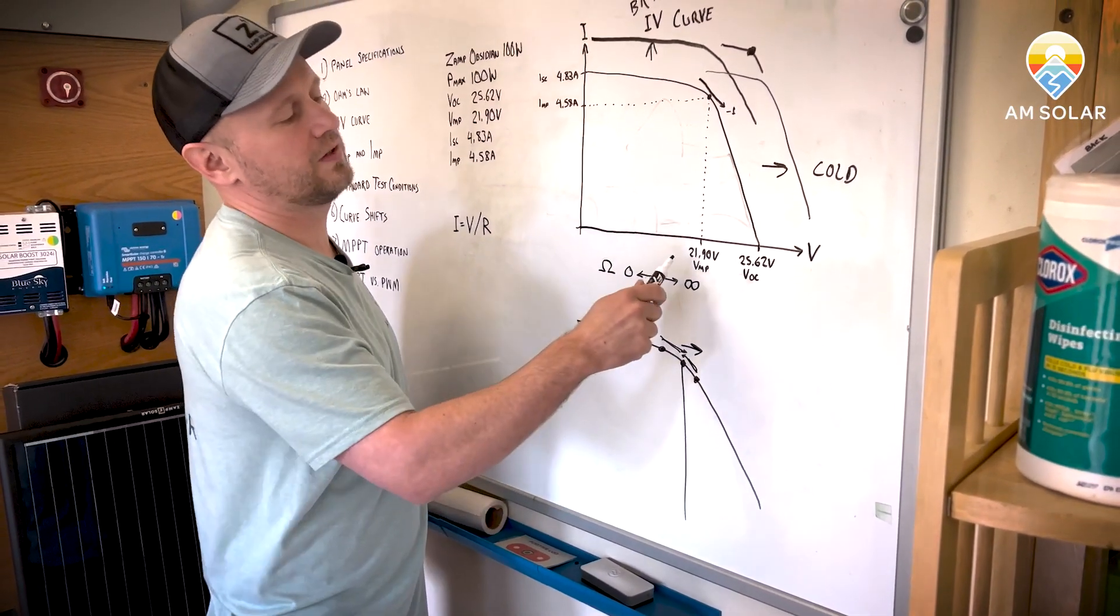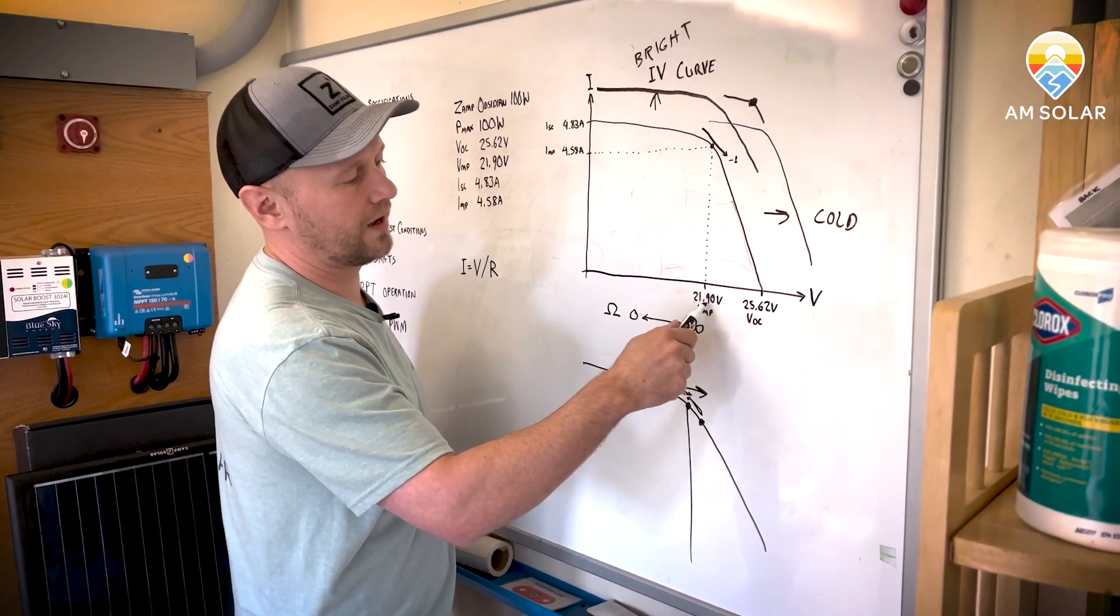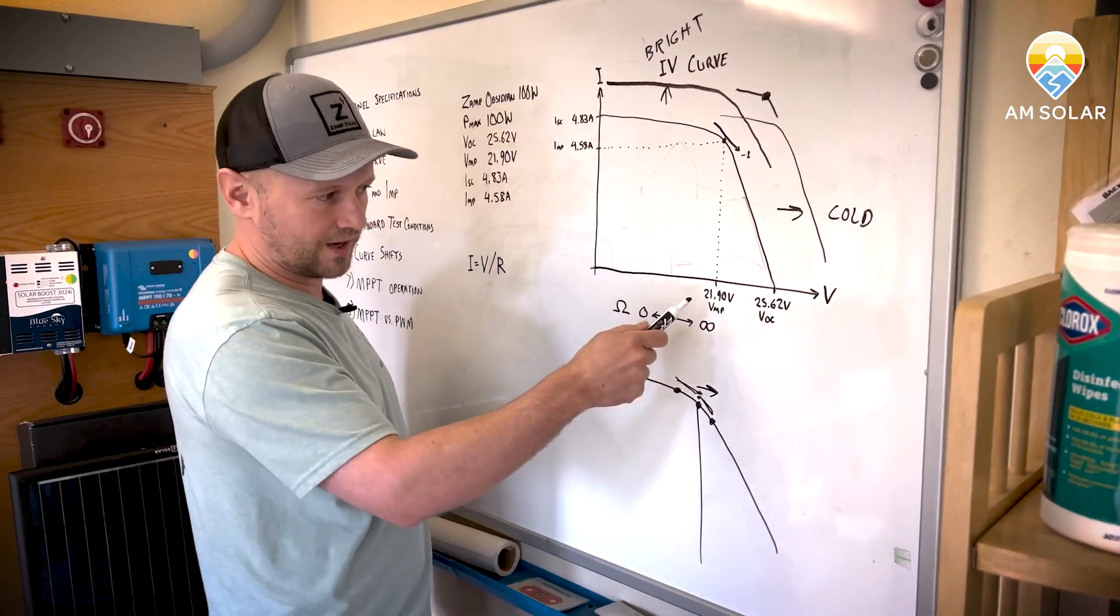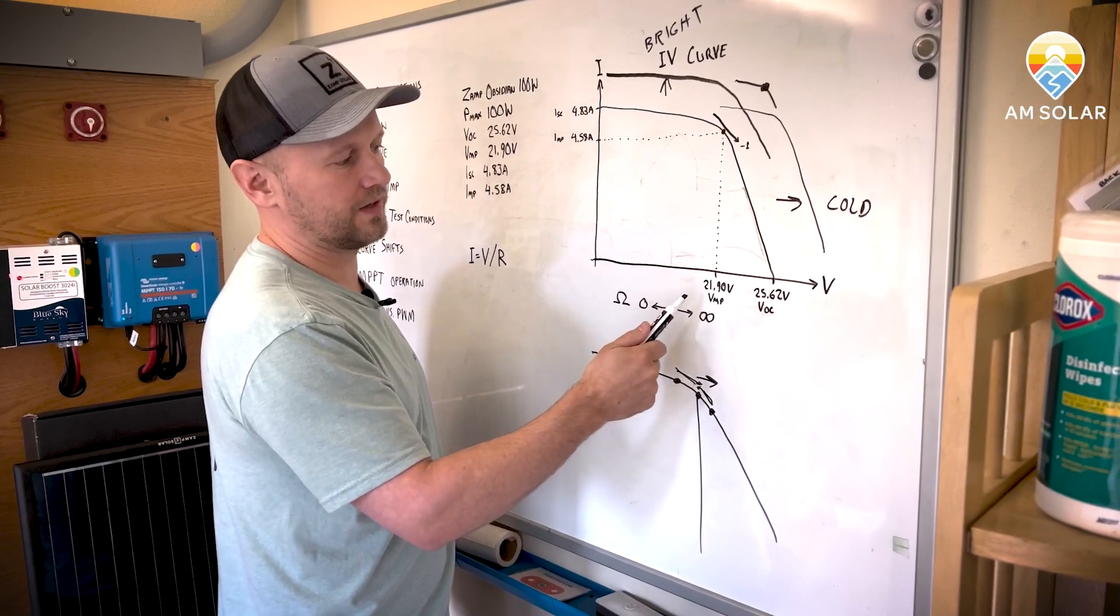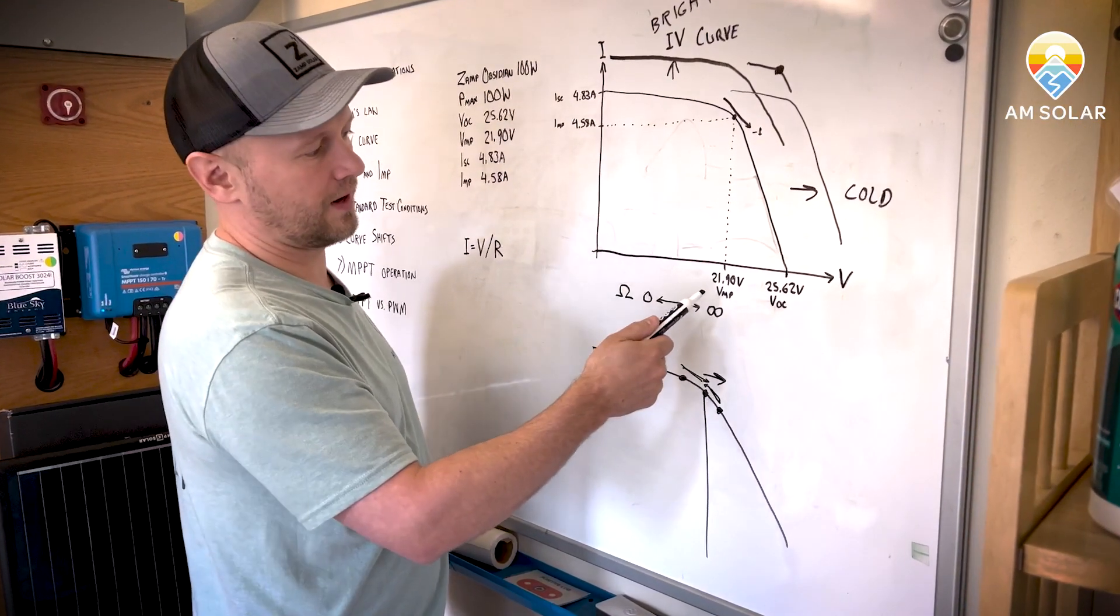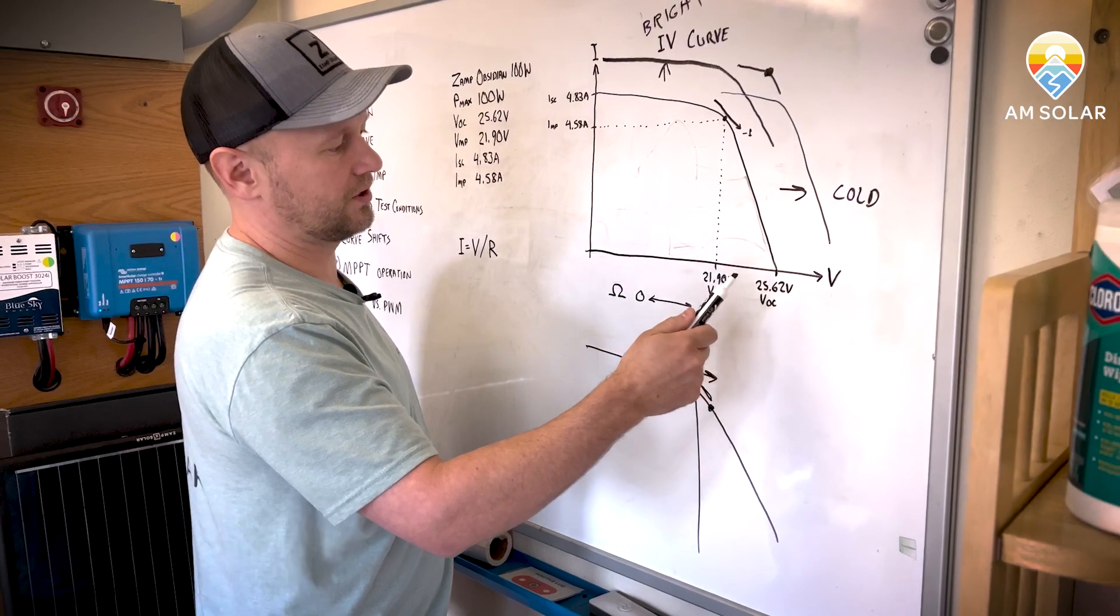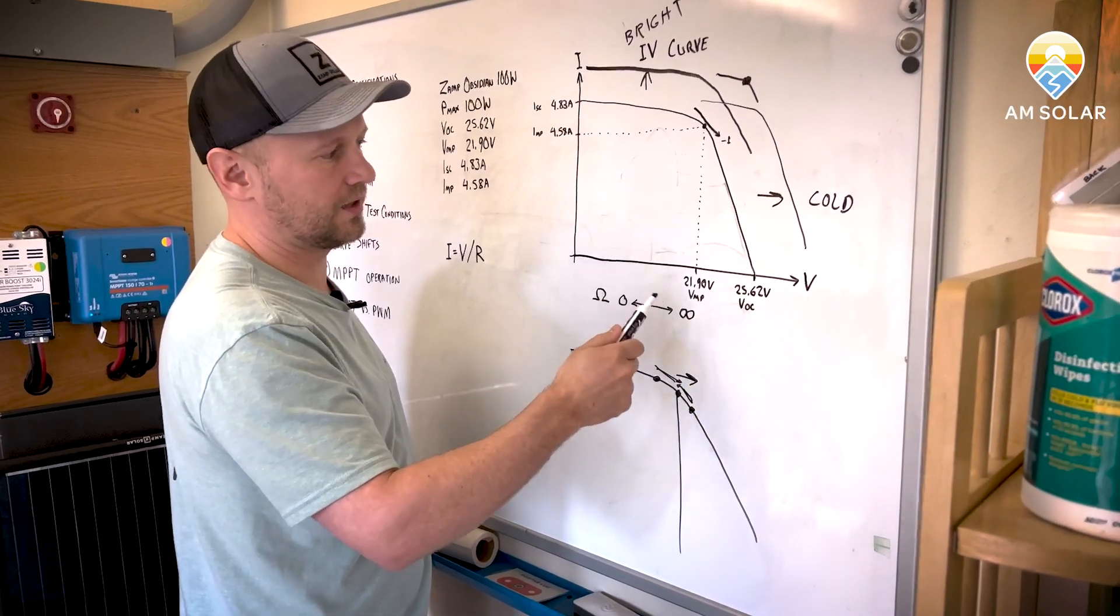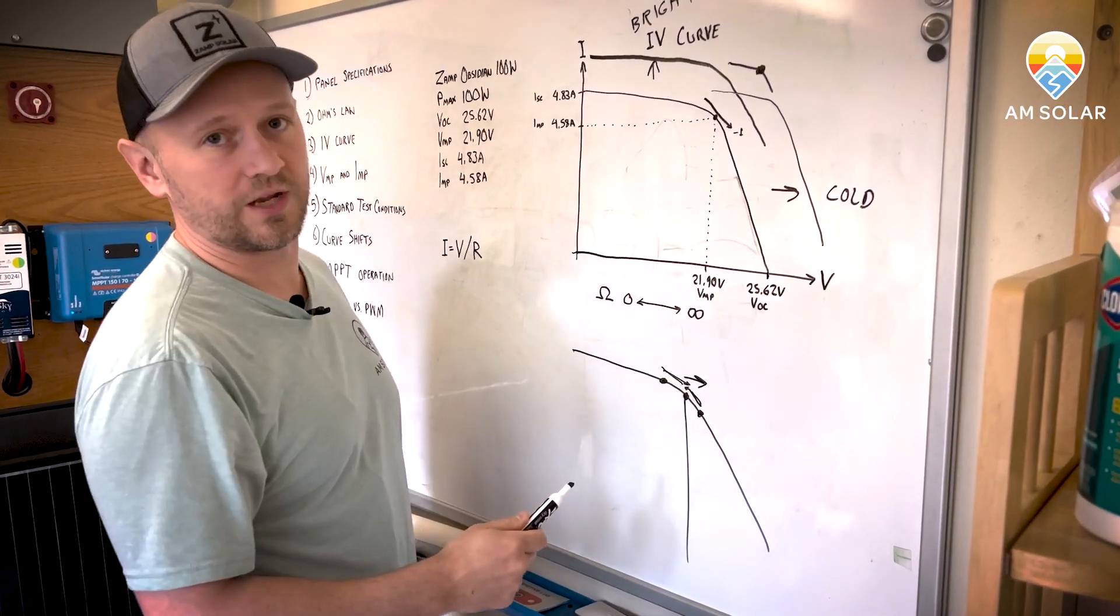So it's not always going to draw 21.9 VMP. It'll only do that when it's 25 degrees Celsius and a thousand watts per meter irradiance. When it gets brighter, it's going to change. When it gets colder, it's going to change. And it's going to be constantly changing.